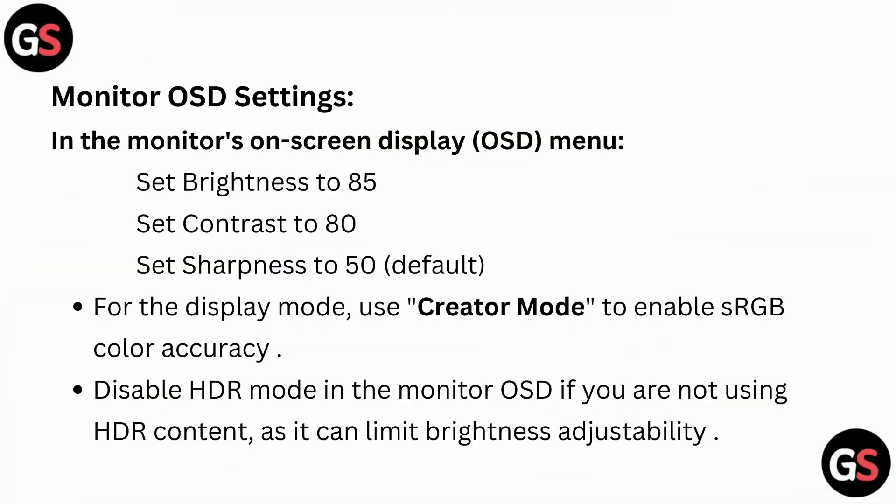For monitor OSD settings, in the on-screen display menu set brightness to 85, contrast to 80, and sharpness to 50%, which is the default. For the display mode, use Creator Mode to enable sRGB color accuracy.